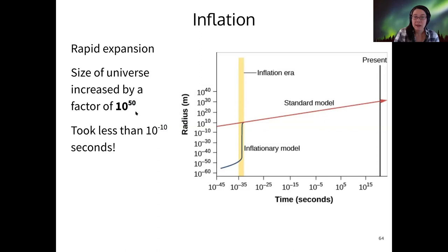The universe has inflated from a tiny 10 to the minus 50 meter object up to a 10 to the 10 meter radius object. We've added a lot of space in a very short amount of time. That's why it's called inflation.